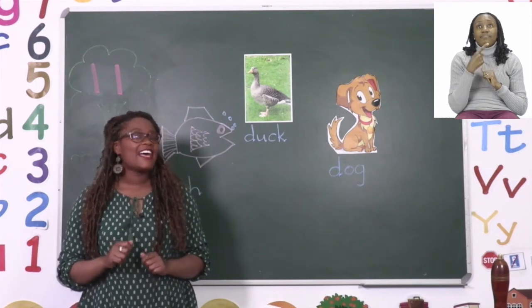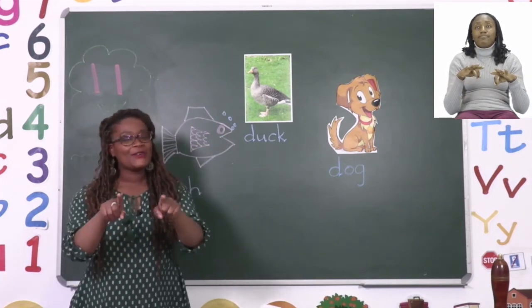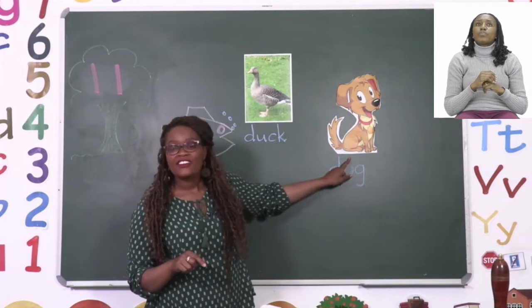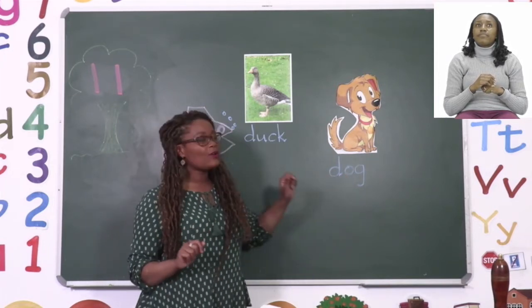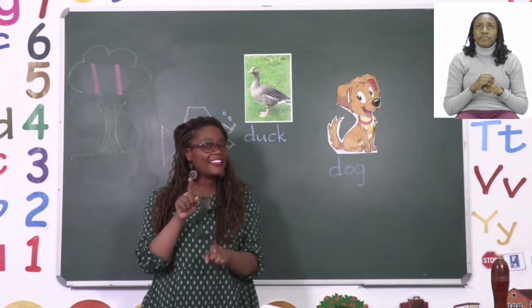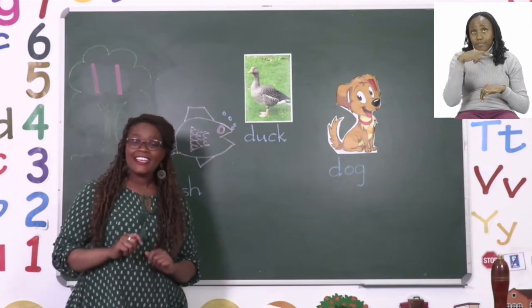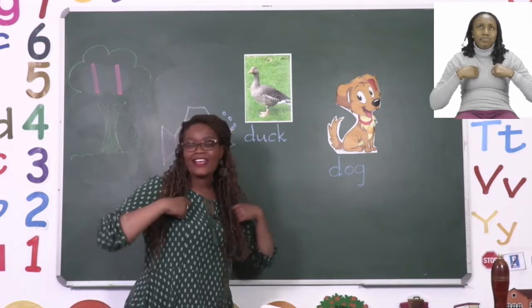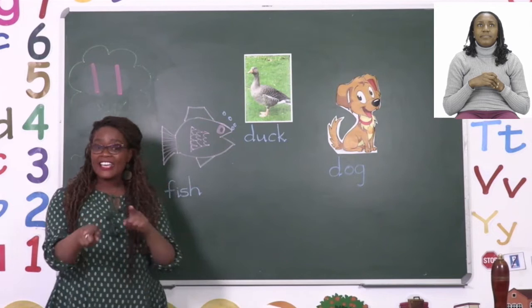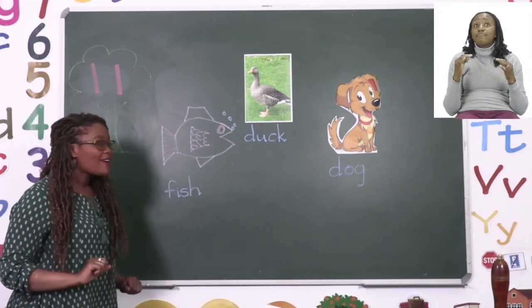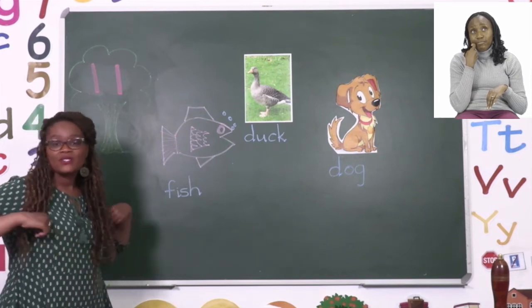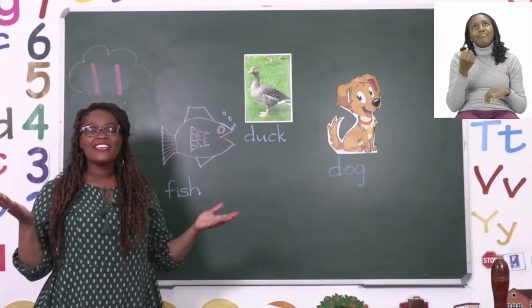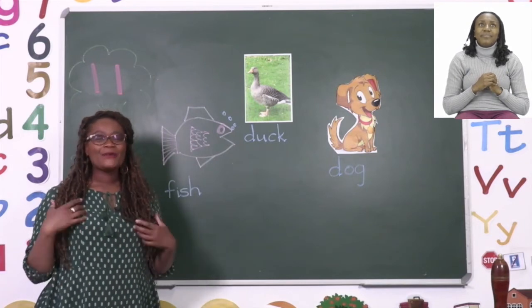Old MacDonald had a farm, E-I-E-I-O! And on that farm he had some dogs, E-I-E-I-O, with a woof woof here and a woof woof there, here woof there woof everywhere woof woof, Old MacDonald had a farm, E-I-E-I-O! And on that farm he had some ducks, E-I-E-I-O, with a quack quack here and a quack quack there, everywhere quack quack, E-I-E-I-O! And on that farm he had some fish, with a swim swim here and a swim swim there, everywhere swim swim, Old MacDonald had a farm, E-I-E-I-O! Well done!